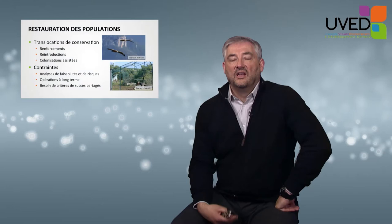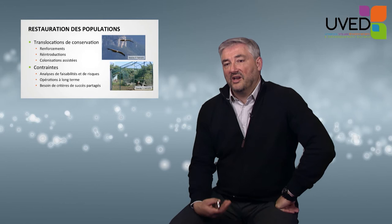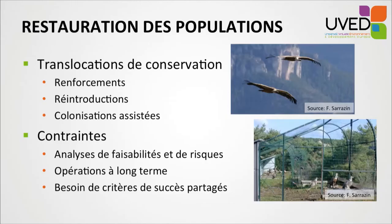Downstream of in-situ and ex-situ conservation actions, we can also try to restore populations by applying conservation translocations. We reinforce existing populations, reintroduce individuals where populations have disappeared, or perform assisted colonization when populations affected by climate change must be moved to survive. These programs, while sometimes successful, also have limitations. Feasibility analysis and risk assessments are necessary, these are long-term programs spanning several decades, and it is essential to compare programs and measure their success over the longer run.